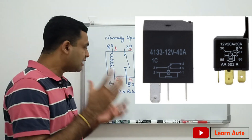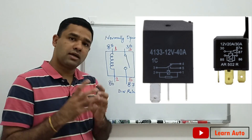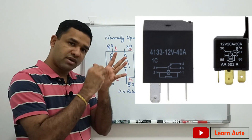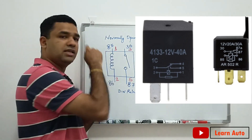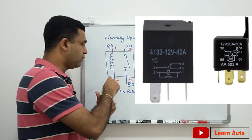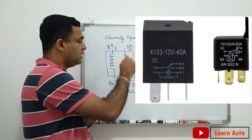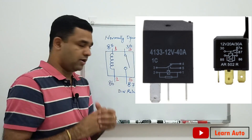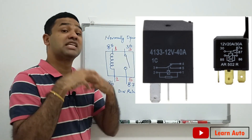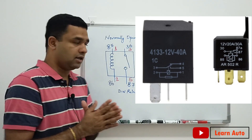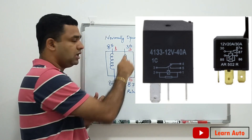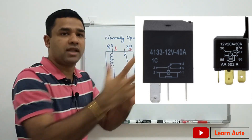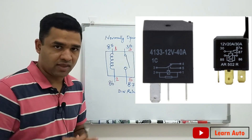This is a DIN relay. If you have a DIN relay, the number starts with 55 — that is the pin number. If you have an ISO relay, the pin numbers are 1, 2, 3, 4, 5.